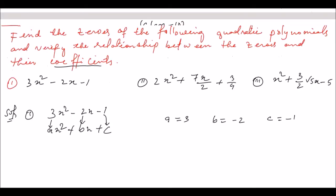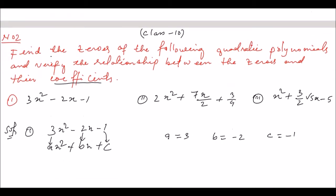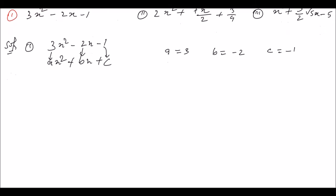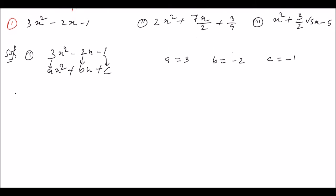Find the zeros. To find the zeros of a polynomial, we set the polynomial equal to zero. The solution of 3x squared minus 2x minus 1 equals zero — we set the polynomial equal to zero to find the zeros. That means the polynomial is zero.